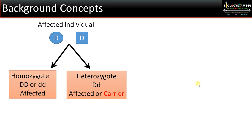Affected individuals are denoted by filled squares or circles. Suppose the allele is D — it can be homozygous (DD or dd), or heterozygous (Dd). If it is a dominant allele, the heterozygote will be affected. If it is a recessive allele, that person will become a carrier.